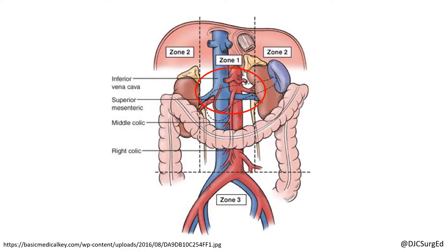Let's start by gaining access to the suprarenal aorta. This can be done two ways: first, with a left medial visceral rotation, or a Mattox maneuver, and second, via direct supraceliac aortic control.